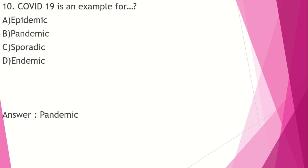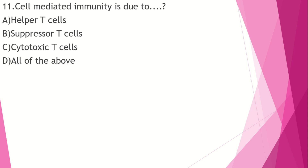Epidemic is a sudden outbreak of a disease in a particular area. Endemic is a disease that is consistently present in a population or region over time — it is a normal or baseline level of disease in a population.